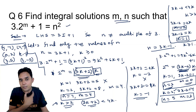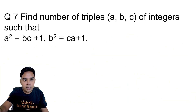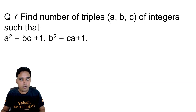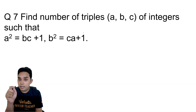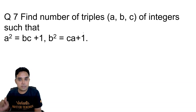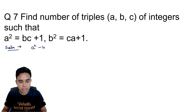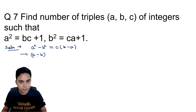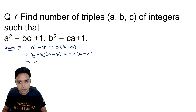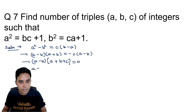Question 7: find the number of triples (a,b,c) of integers such that a²=bc+1 and b²=ca+1. Subtracting the two equations: a²−b² = bc−ca = c(b−a), giving (a−b)(a+b) = −c(a−b), so (a−b)(a+b+c) = 0. Therefore either a=b or a+b+c=0.